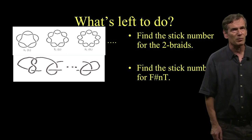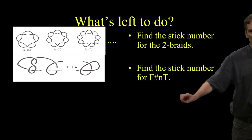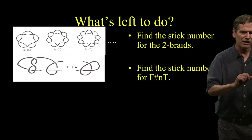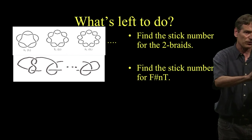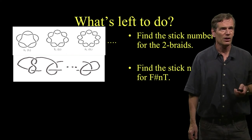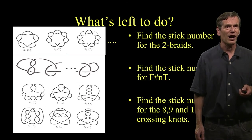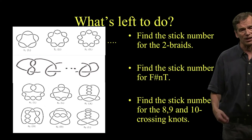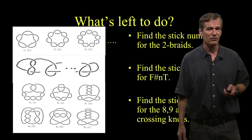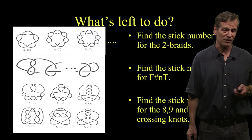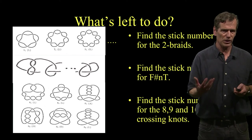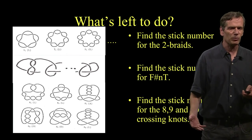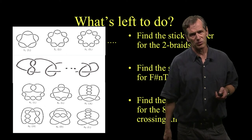Number two, find the stick number for a composition of a bunch of trefoils and one other knot, which is called the figure eight knot. If I just add a different knot on the end, I don't know the stick numbers. Even though I know it for a composition of n trefoils, I do not know it in this case. And number three, just find the stick number for the eight, nine, and 10 crossing knots. So these are knots that can be drawn in pictures of eight, nine, or 10 crossings. And surprisingly enough, we still don't know the stick numbers for all of those knots. So there's lots of interesting questions still open with regard to this question of how many sticks does it take to make a knot.